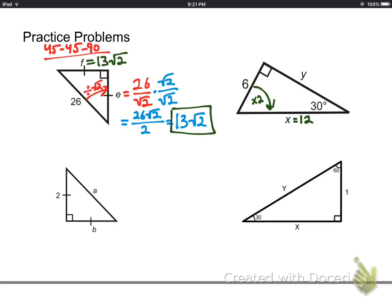So six times two is 12. We could use the Pythagorean theorem for the third side, or we could just remember, hey, the short leg times root three gives us the longer leg. So the answer is going to be six root three for y.